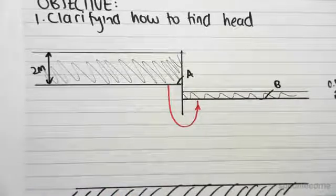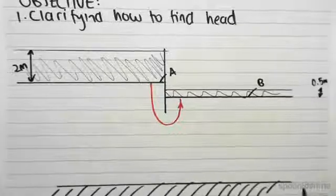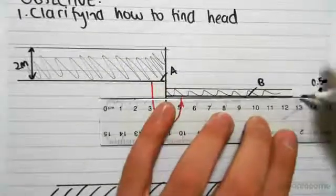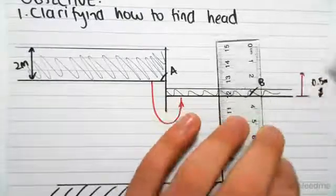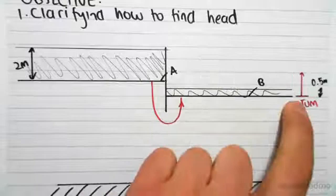Okay, but we're going to now clarify how we find head because it can be quite confusing. So the first thing we need to do as always is define a datum. So we're going to put our datum down here. It doesn't matter where you put your datum. We just need to put it in a convenient spot, which is down here for us. So our datum starts here.